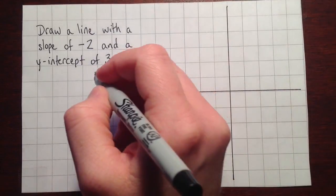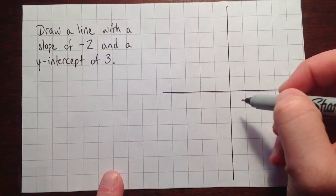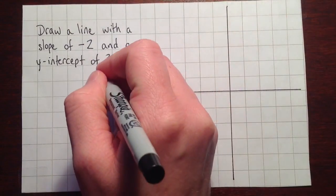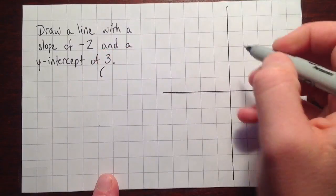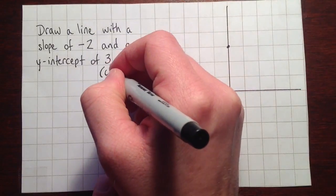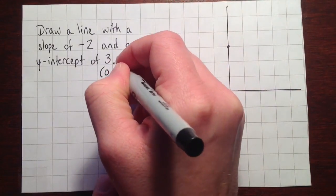So the first thing to do is to remember that a y-intercept of 3, that's where the line will hit the y-axis. So that's going to have the coordinates, it'll be this point here, so the x value will be 0 and the y value will be 3.